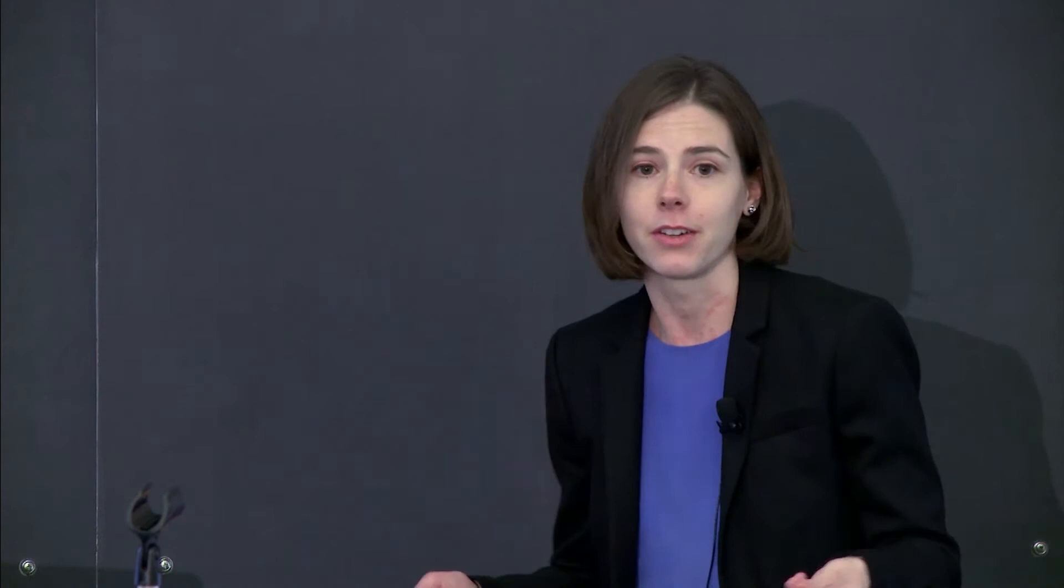Now, around 2000, it was pointed out that there is a particle for which that problem doesn't exist. And this is the low energy anti-deuteron. So what theorists realized is that there is almost no way to produce anti-deuteron in the universe other than from dark matter annihilations or decay. And so what these theorists said is that if even a few low energy anti-deuteron are discovered, this should be taken seriously as a clue for the existence of, well, they said neutralinos, but we can be more general, massive WIMPs in the Milky Way.